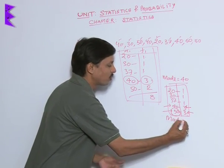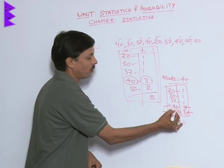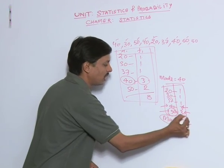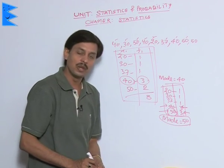In case when the highest frequency repeats then which frequency is having the higher observation is known as the mode. So for this case when he is getting 40 as frequency 3, 50 as frequency 3, mode will not be taken 40, mode will be taken 50.